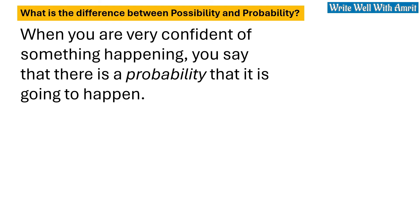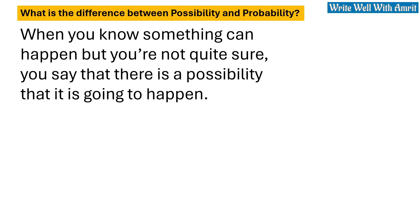When you are very confident of something happening, you say that there is a probability that it is going to happen. When you know something can happen but you are not quite sure, you say that there is a possibility that it is going to happen.